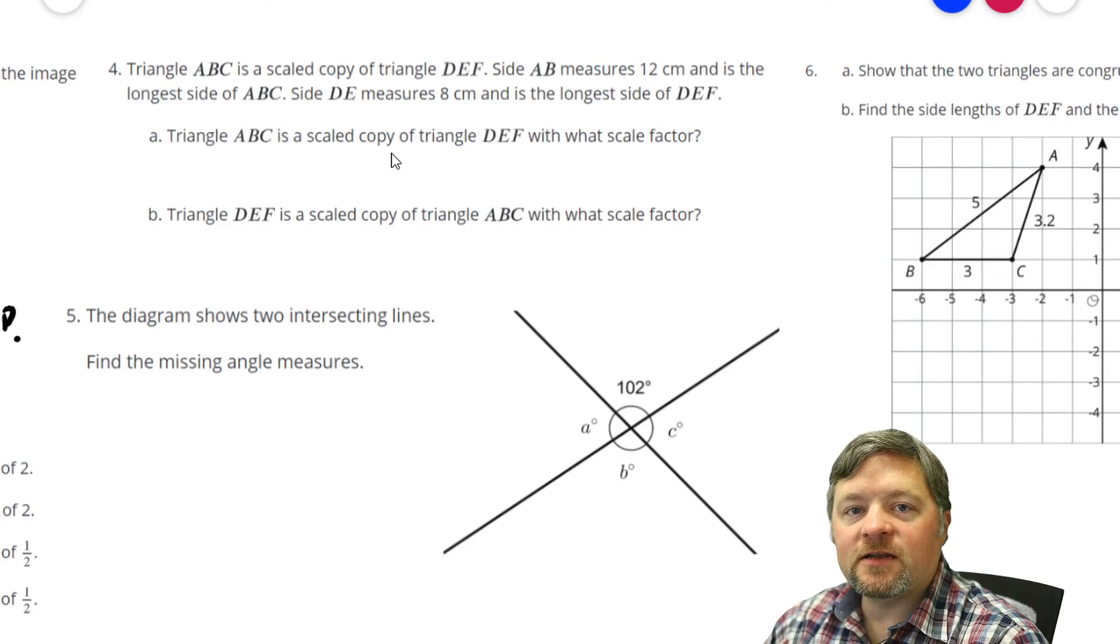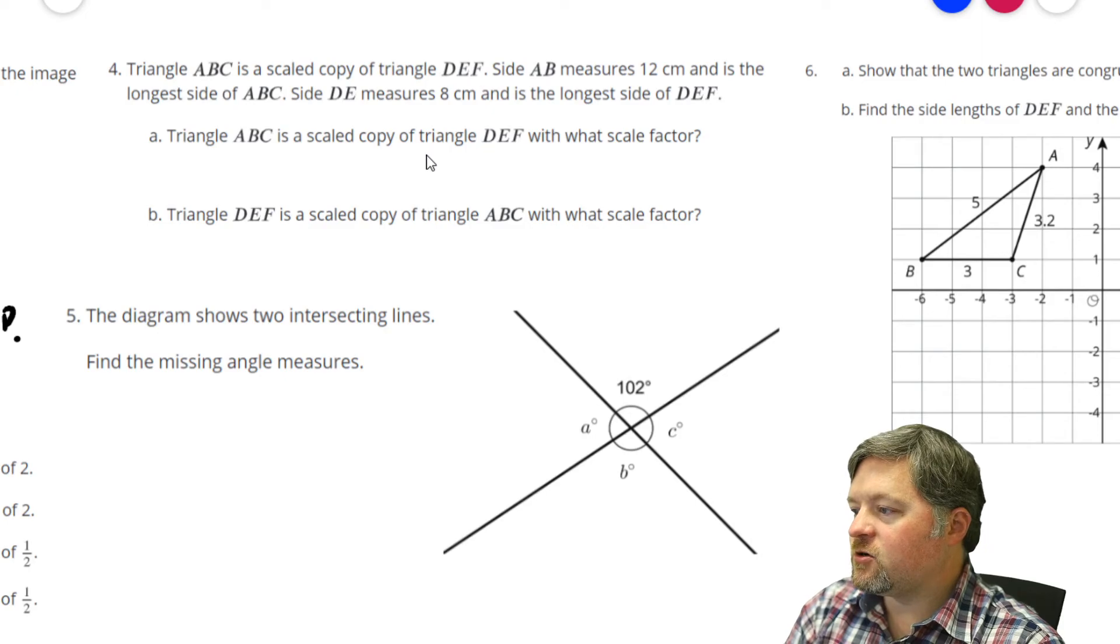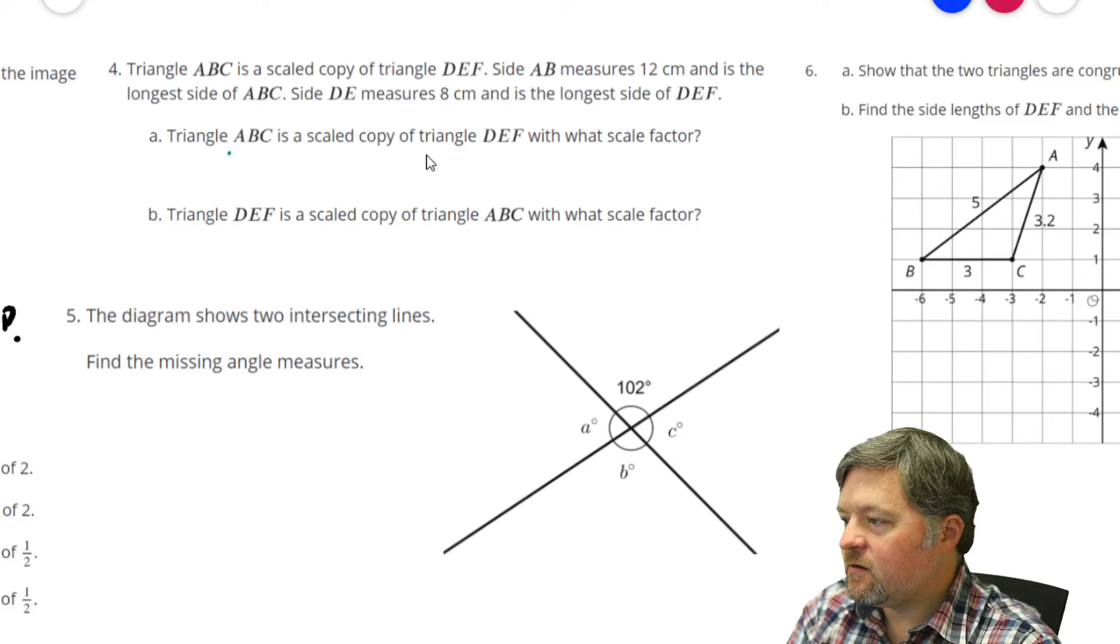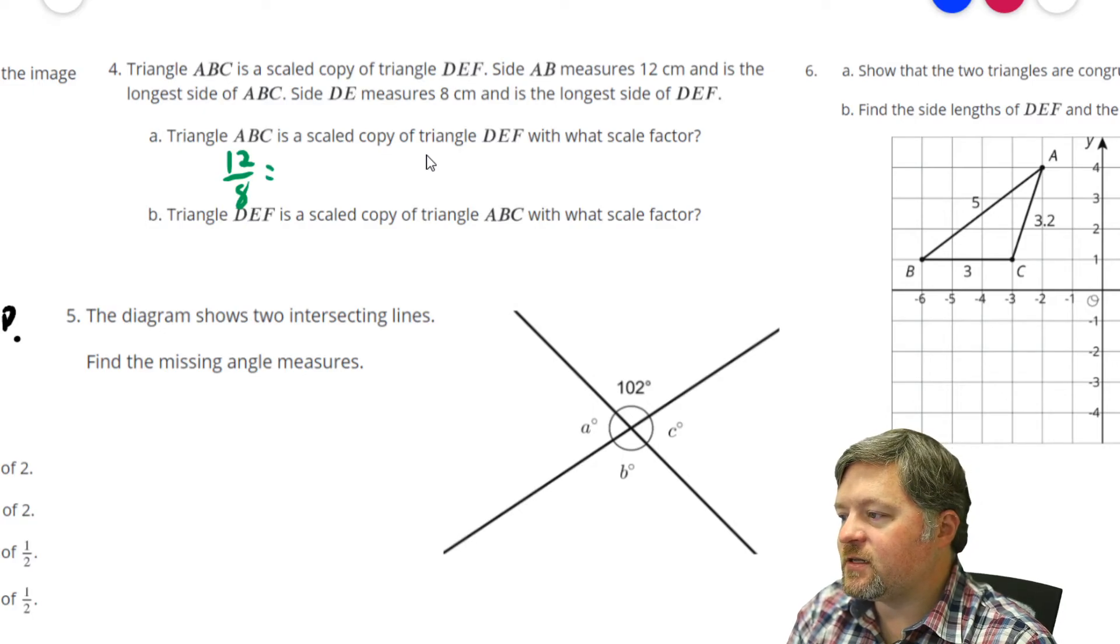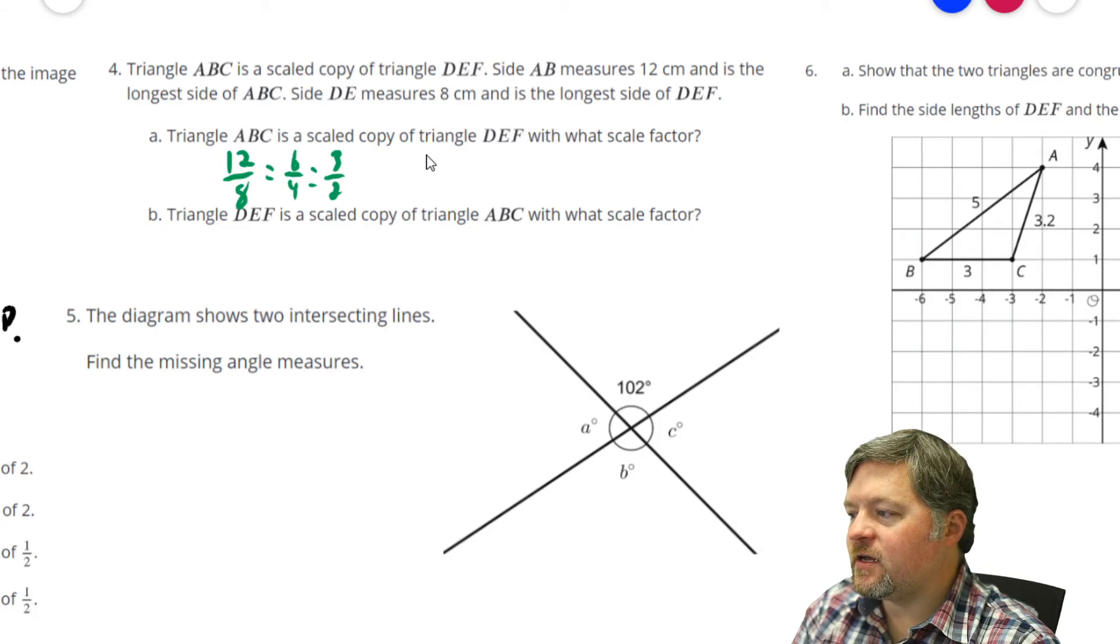If we're taking a small thing and making it big, our scale factor has to be greater than 1. So, how do we find out what we multiplied by? We divide. 12 divided by 8, which is, let's simplify our fraction. That could be 6 fourths or 3 halves. So, our scale factor is 3 over 2 or 1 and 1 half.